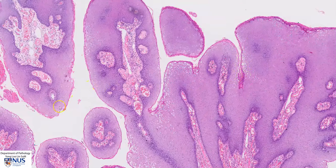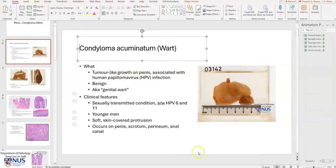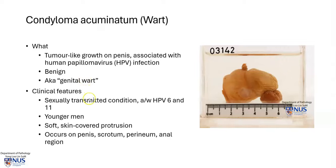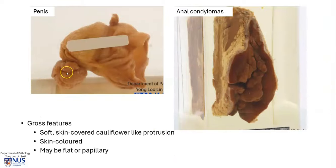Condyloma, also known as condyloma accuminatum or wart — in this instance, genital warts — are tumour-like growths on the penis or genital regions, associated with HPV infection. They are benign, usually sexually transmitted, and associated with low-risk types of HPV, HPV6 and 11. They appear as skin-covered protrusions and can occur on the penis, scrotum, perineum, and anal region. Grossly, we see a cauliflower or warty papillary-looking protrusion from the skin. These lesions may be flat or papillary.